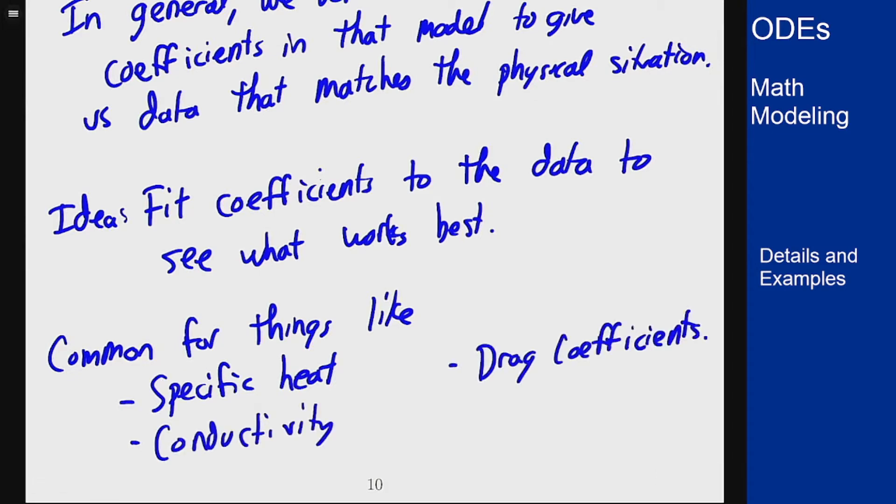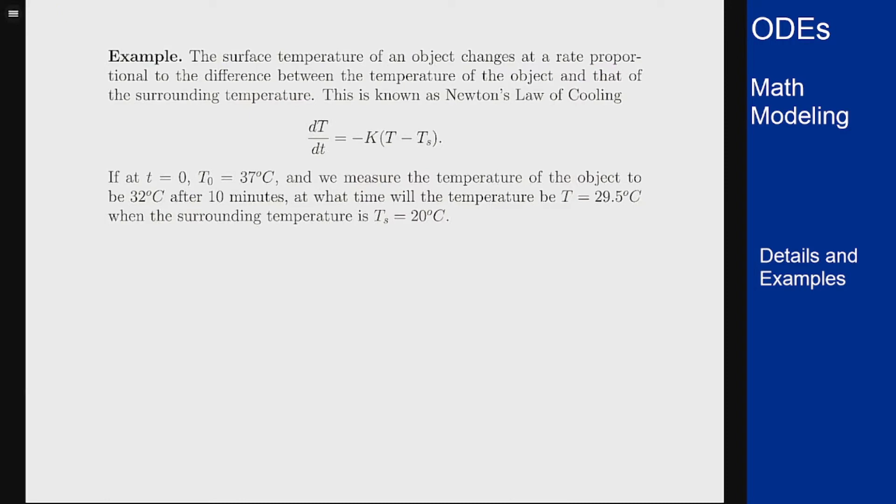Let's say we know that some object's surface temperature changes via Newton's Law of Cooling, which means dT/dt = k(T - T_s). The main issue is we don't know what this k value is. The info we have is that at t=0 we know the temperature is 37°C, and 10 minutes later it's 32°C, and we want to know when the temperature will reach 29.5°C.